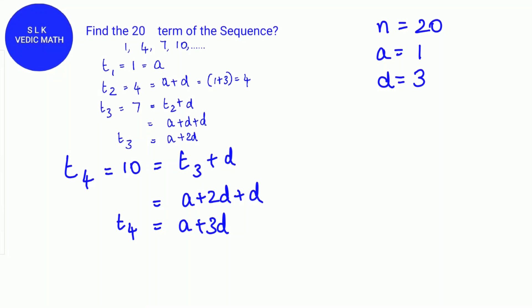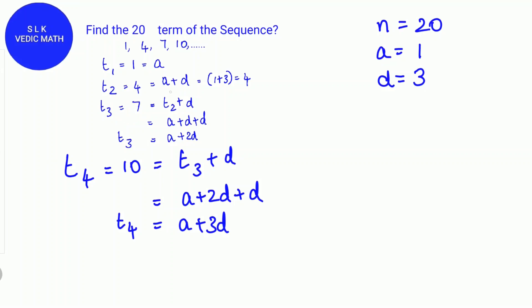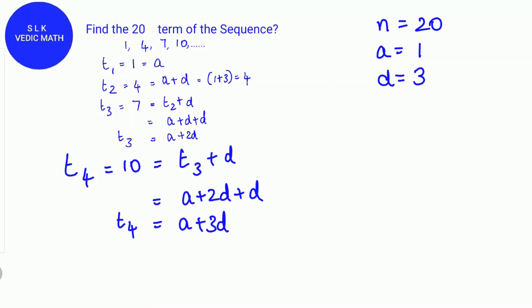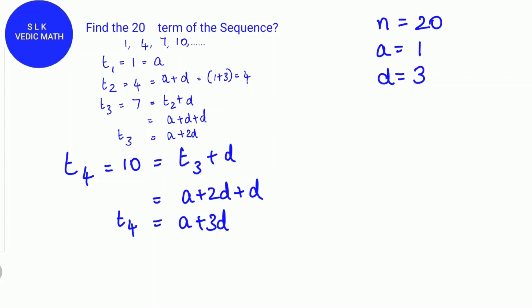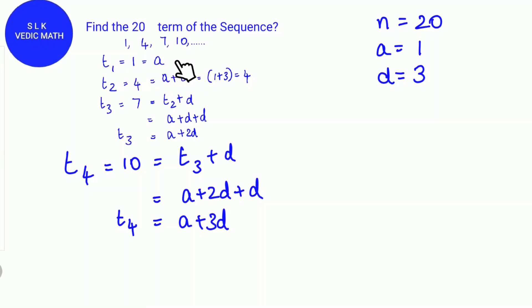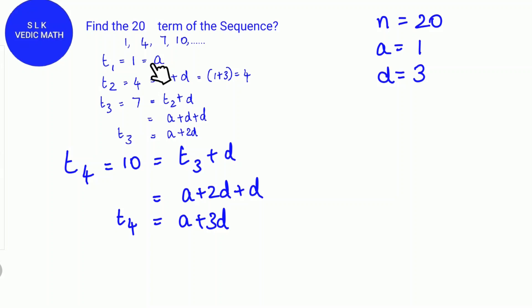Let's see the second term T2. T2 is a plus (2-1) into d, so it's a plus 1d. For T1, it's a plus (1-1) into d, so it's a by itself.